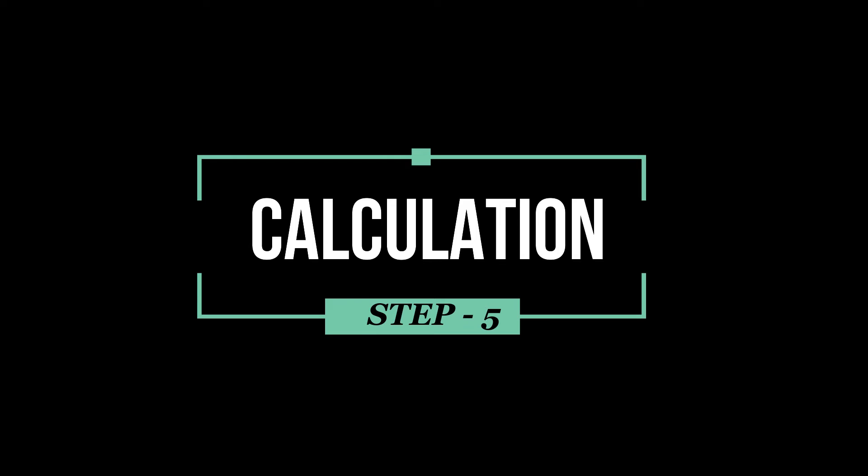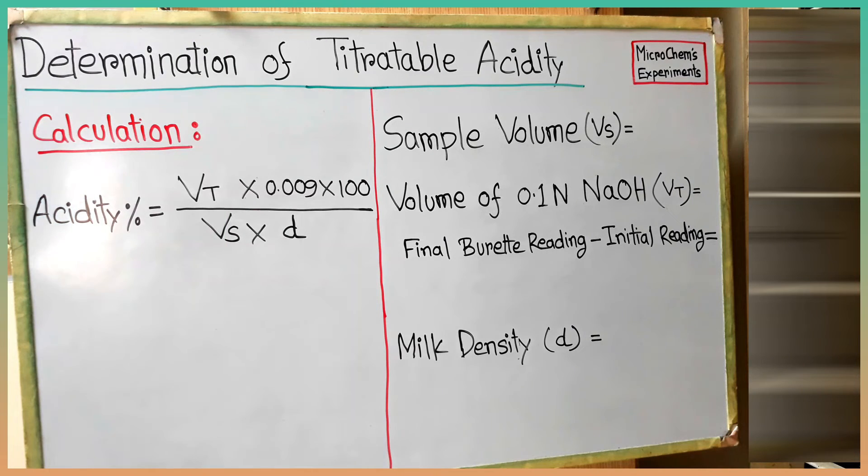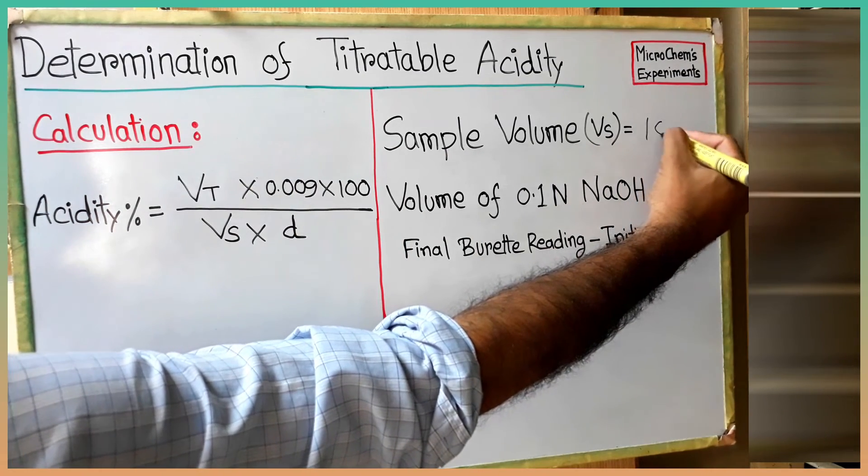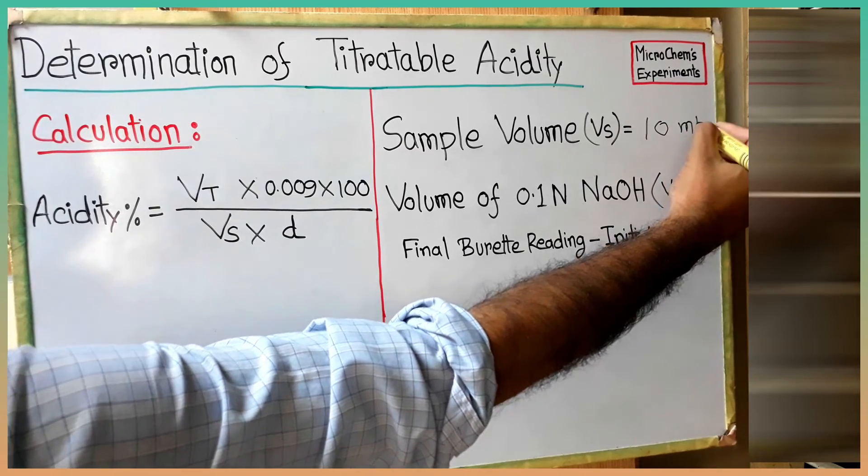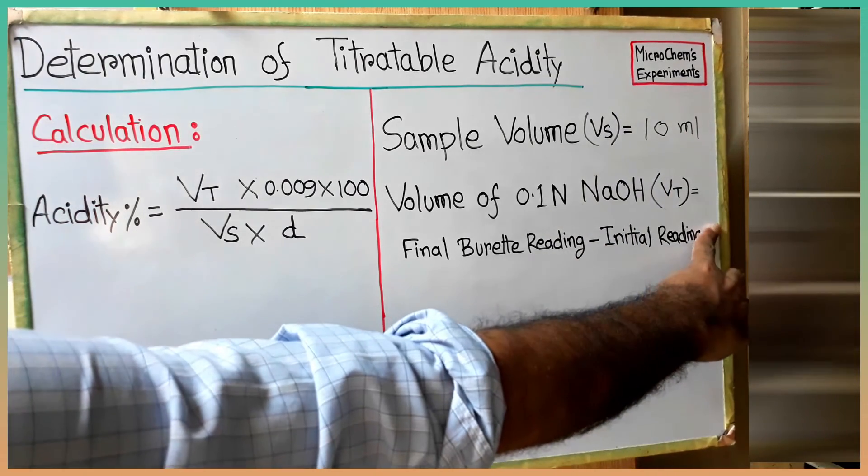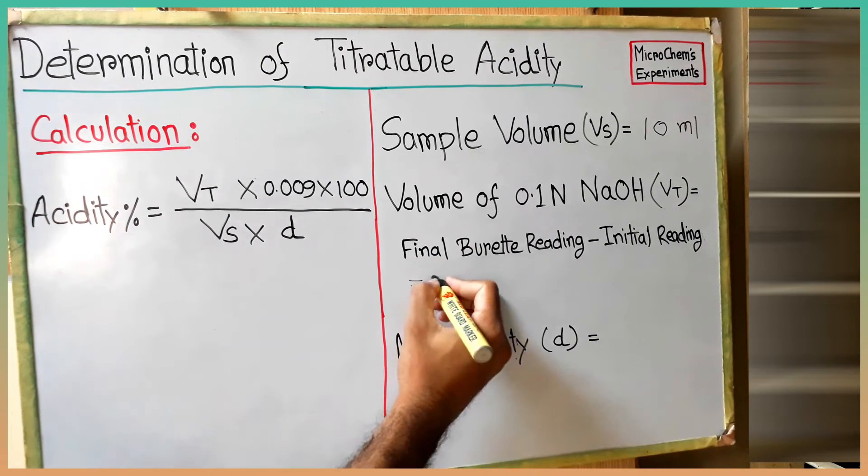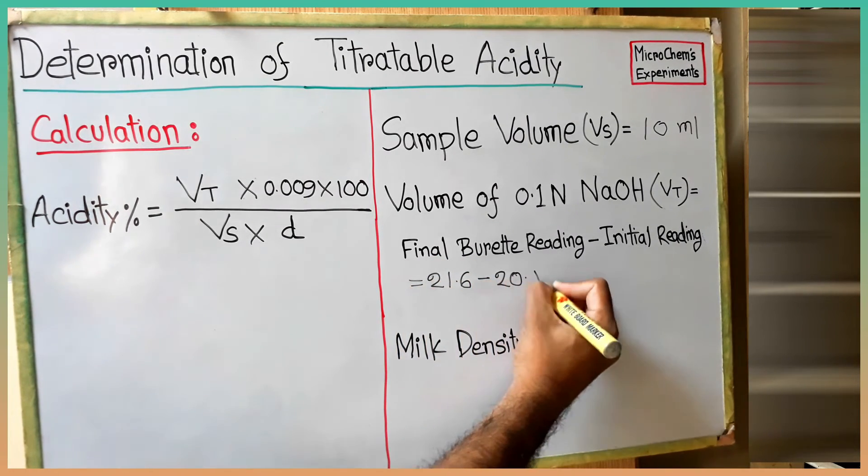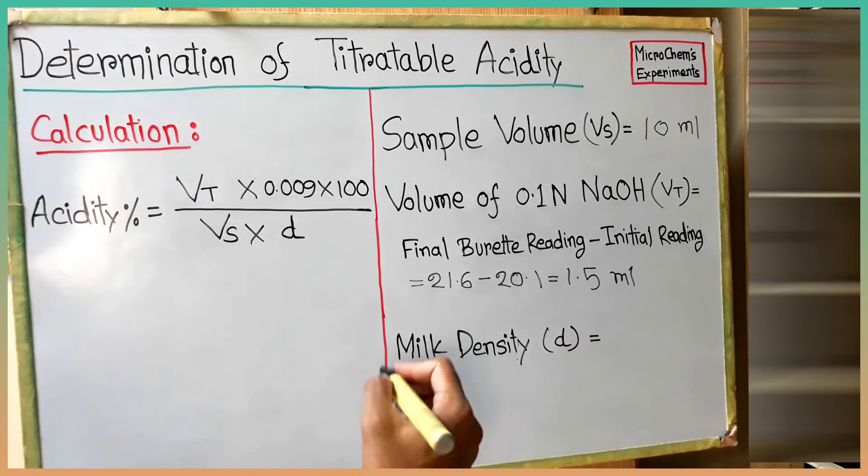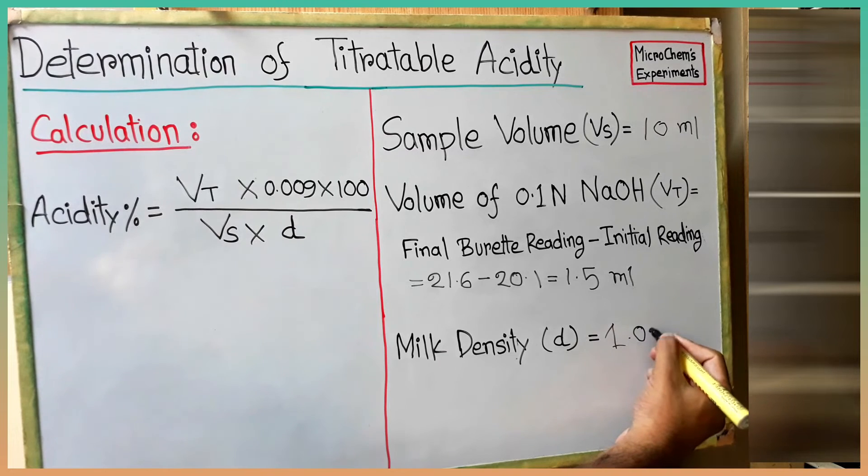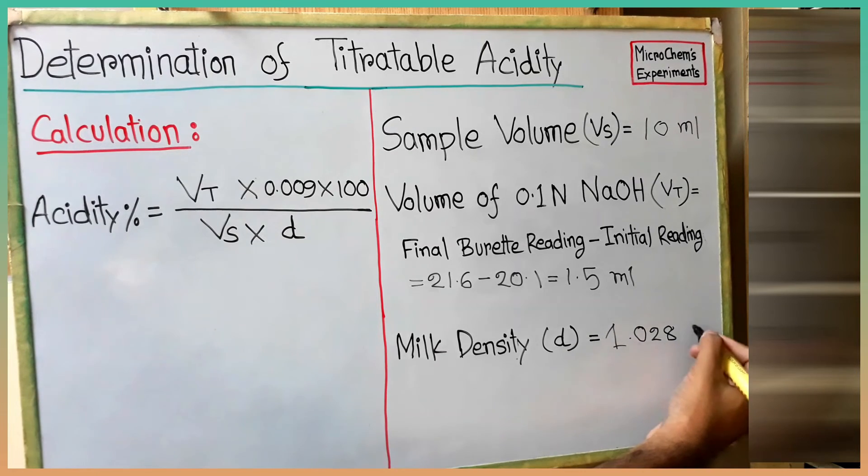Now we will calculate the acidity of our sample. At first, we will put the values in the right side of the board. Sample volume Vs is 10 ml. Volume of 0.1 normal sodium hydroxide is final burette reading minus initial reading which is 1.5 ml. Density of the milk sample is 1.0284 grams per ml.